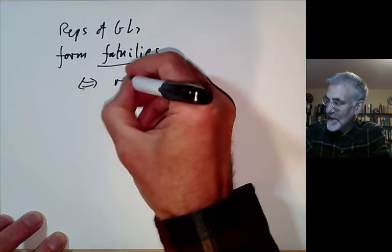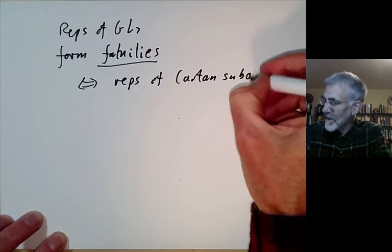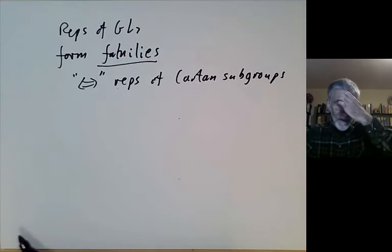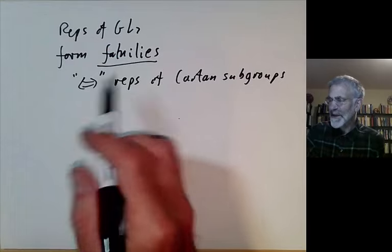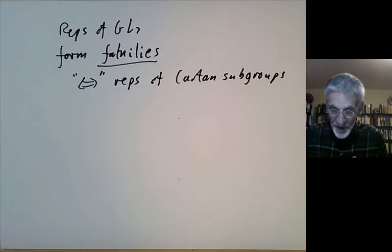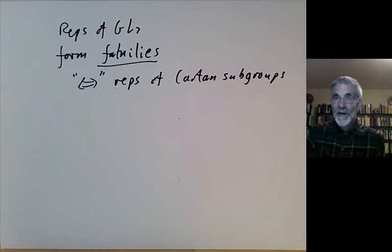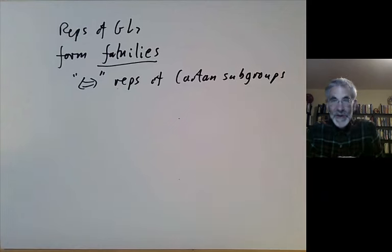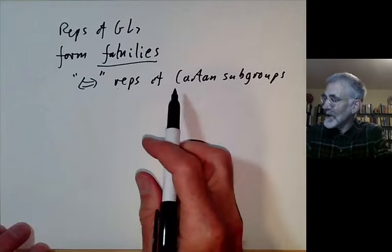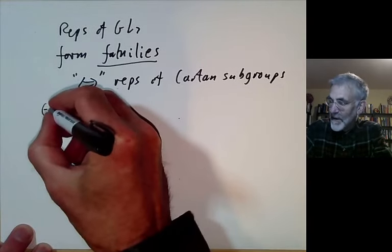The key theme about representations of GL2 is that representations of GL2 form families corresponding roughly to representations of Cartan subgroups. This is not an exact correspondence, just a rule of thumb. It's actually a special case of a much more general collection of correspondences called Langlands functoriality, which tells you very general conditions under which representations of one group give you representations of another group.